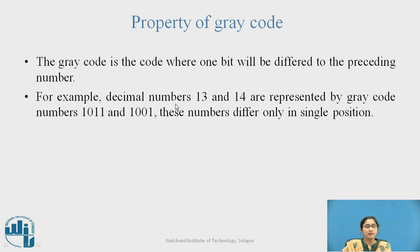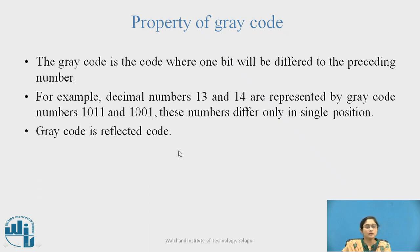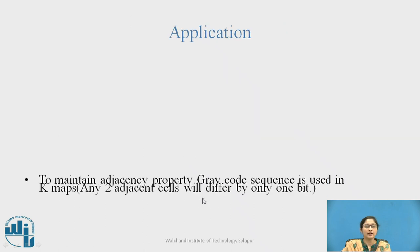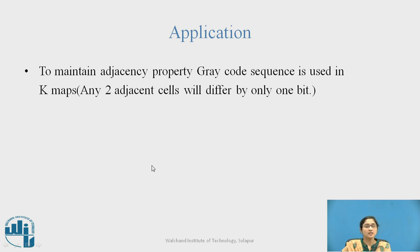For example, decimal numbers 13 and 14 are represented by gray code numbers 1011 and 1001. These numbers differ only in a single bit position — bit 1 is 1 in one and 0 in the other, so they differ in only one single position. Gray code is a reflected code. Its application is in K-maps, where a gray code sequence is used to maintain the adjacency property, because any two adjacent cells will differ by only one bit.